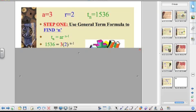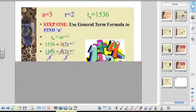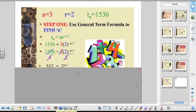Now I want to divide both sides by 3 to get rid of the A. And usually you're going to do that. Divide both sides by 3. Then I get an equation 512 is equal to 2 to the power of N minus 1.